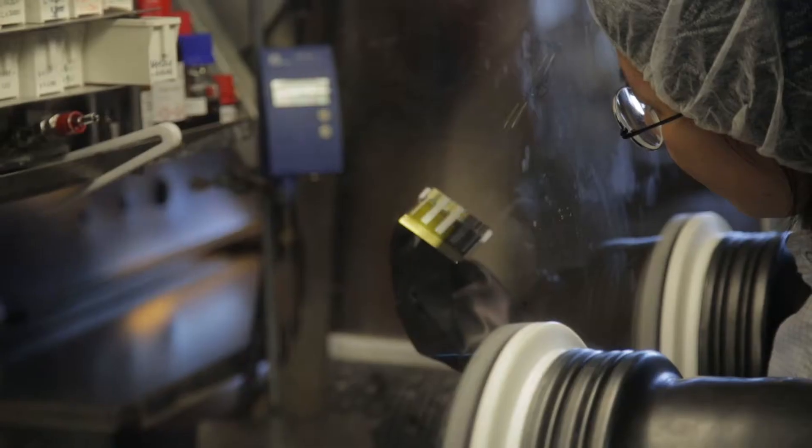My name is Uli Würfel. I'm head of the department Organic and Perovskite Photovoltaics at the Fraunhofer Institute for Solar Energy Systems here in Freiburg. In this department we develop new types of solar cells based on organic or perovskite materials.